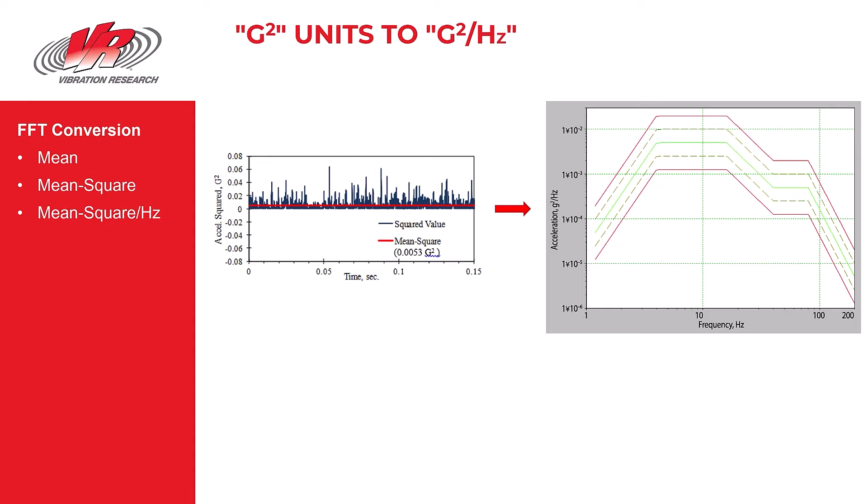So that shows us how we get the units G squared per Hertz. You can have peak values, you can have peak to peak values, we also in the vibration industry refer to G squared per Hertz.